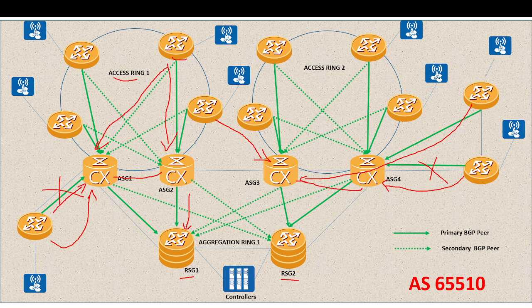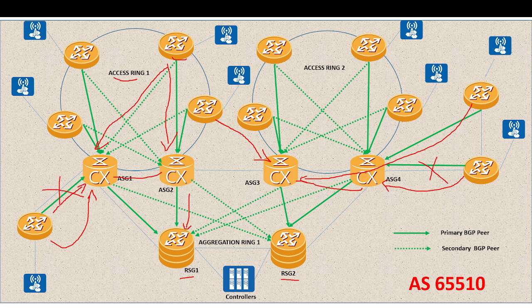For intra-AS BGP, we normally use private AS numbers. Private AS numbers range from 64512 to 65535. We select a private AS number and assign it to a cluster. For this setup we are using AS 65510, which is a private AS. When connecting to the internet or external networks at the point of interconnection, you then use a public AS number.